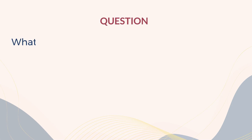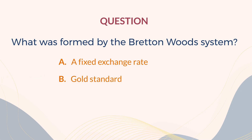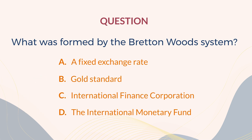Answer the question: What was formed by the Bretton Woods system? A. A fixed exchange rate. B. Gold standard. C. International Finance Corporation. D. The International Monetary Fund. The correct answer is D. The International Monetary Fund.